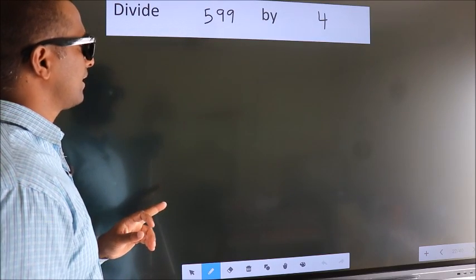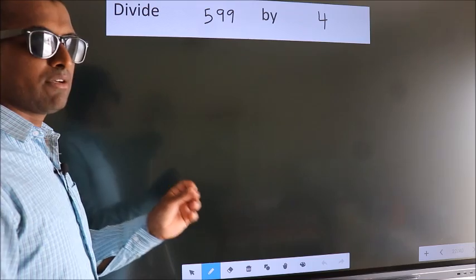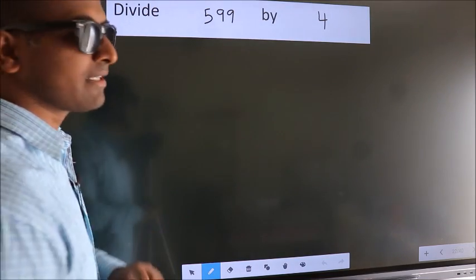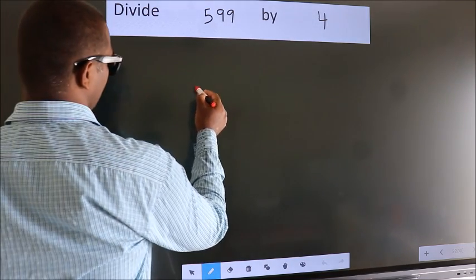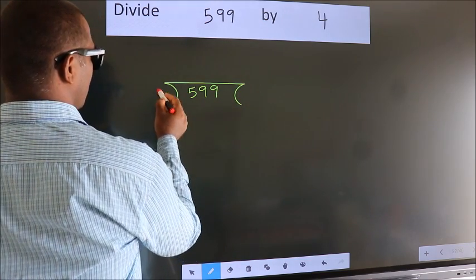Divide 599 by 4. To do this division we should frame it in this way. 599 here, 4 here.